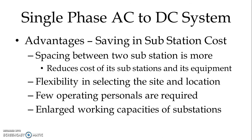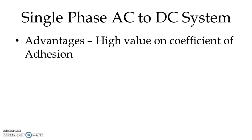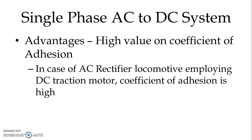There is also an enlarged working capacity of the substation. In DC substations, very high current imposes certain capacity limitations, but in AC systems the current passing through the equipment is very low, so higher substation ratings are possible. Another advantage is a high coefficient of adhesion — in AC rectifier locomotives employing DC traction motors, the coefficient of adhesion is quite high, allowing the locomotive to carry more weight compared to other traction systems.